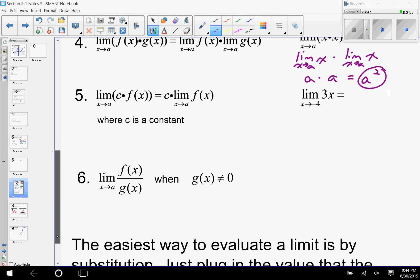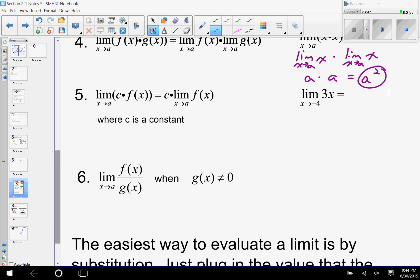Some smaller ones here—this property we actually use a lot consciously, whereas the sum and difference, the product, and even if you look down at number 6 with quotient, those we kind of just do without thinking. This one is the constant multiple.